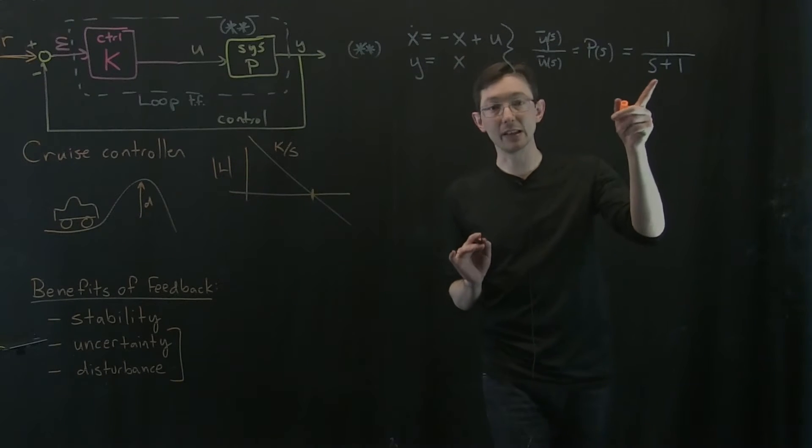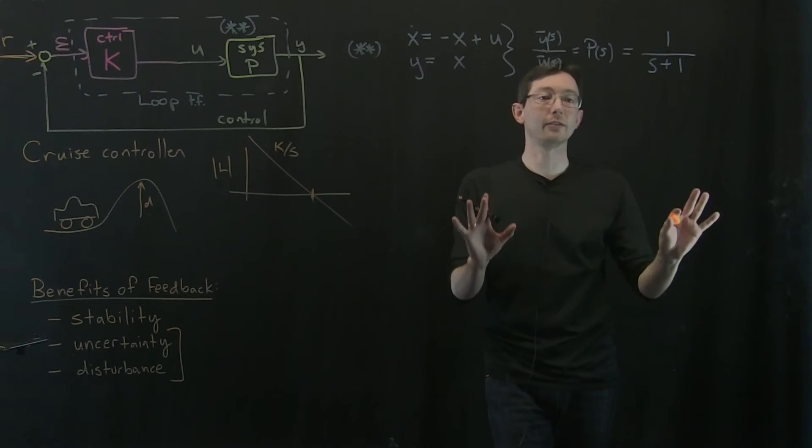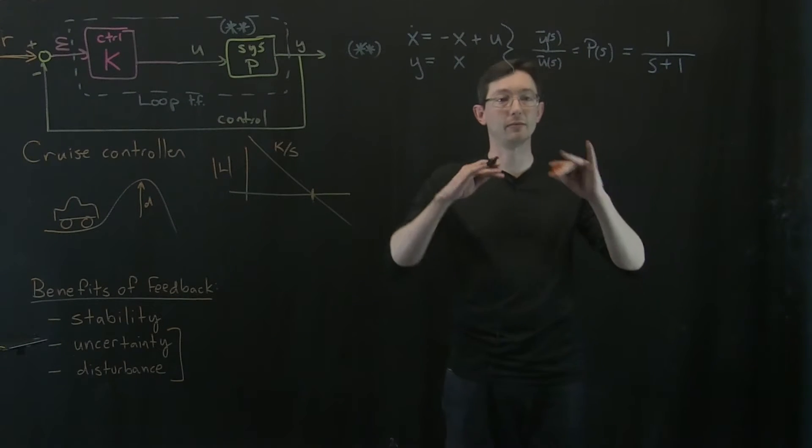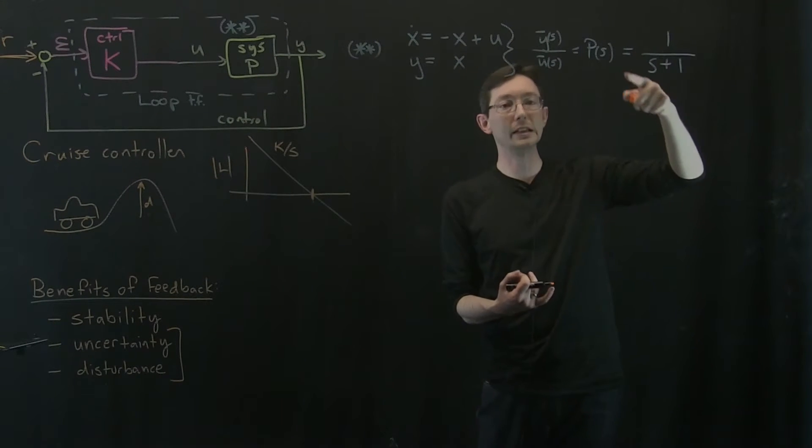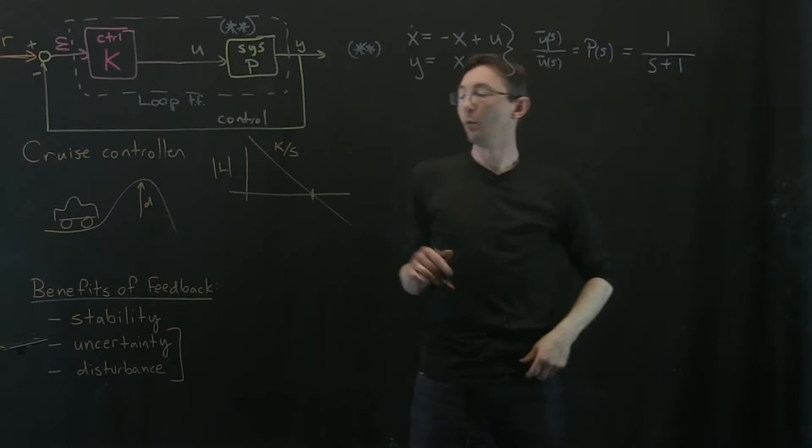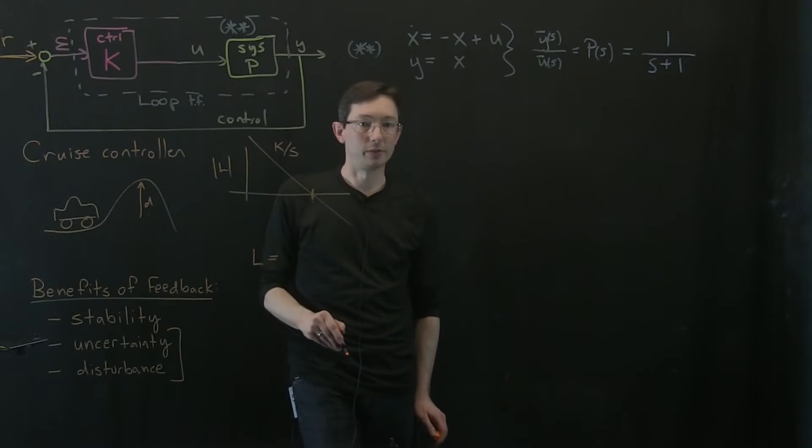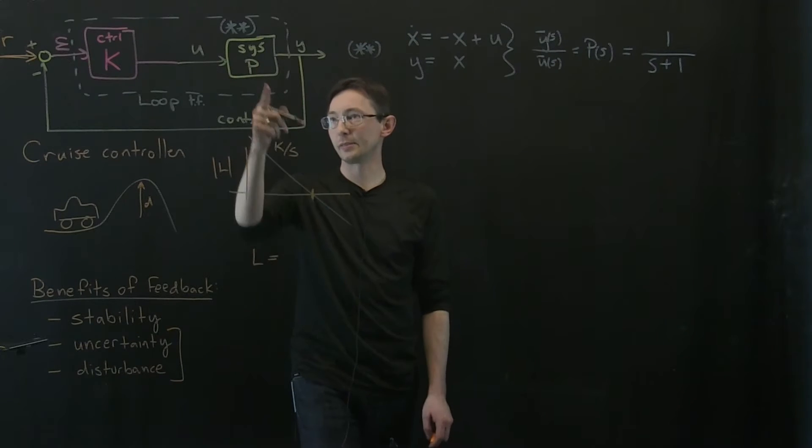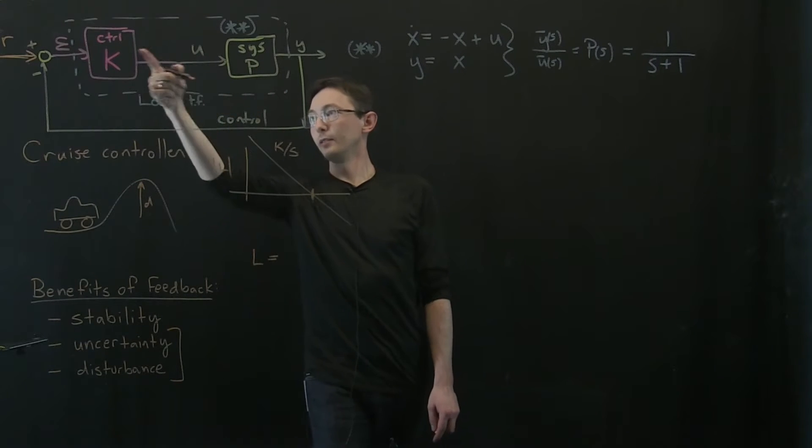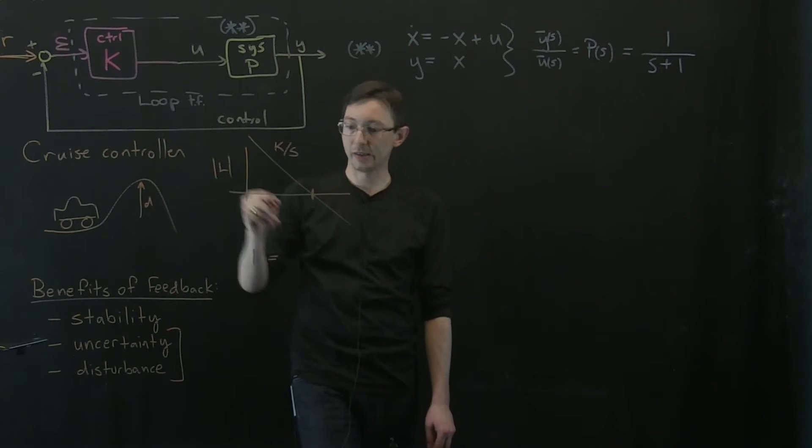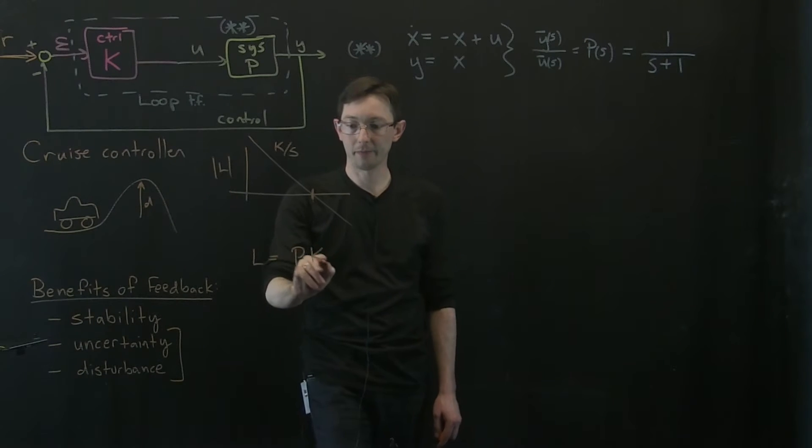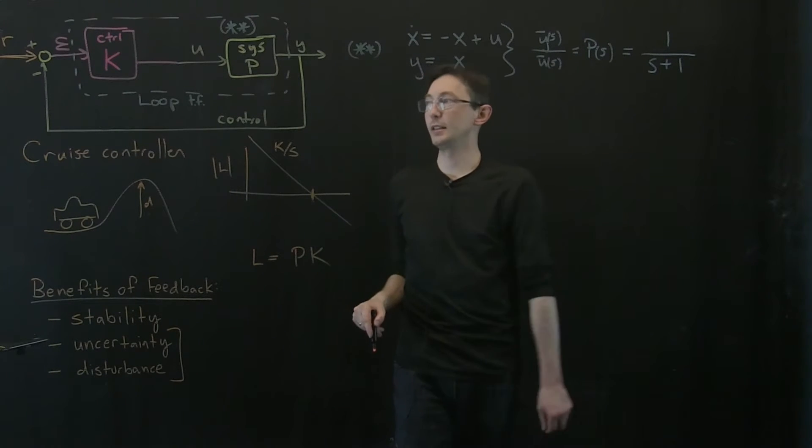And so at least in this really simple case - now this is kind of dangerous, don't do this for all systems without thinking about it - but at least for this stable system, what we can do is we can say, well, L equals p times k. And I want this to equal... so it's p times k.